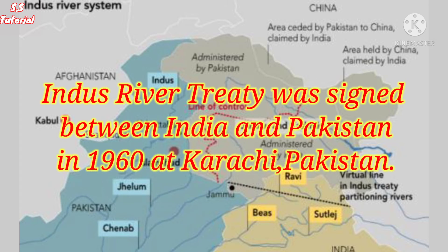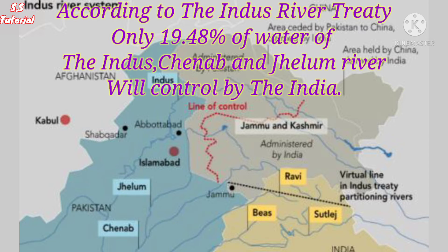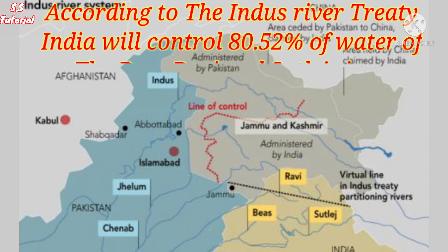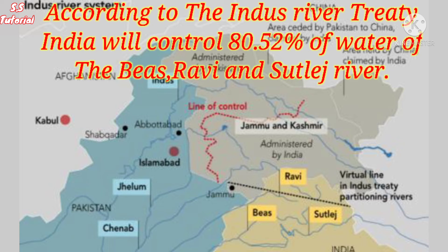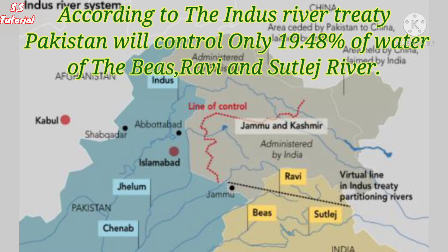There was a river water dispute between India and Pakistan, and the Indus Water Treaty was signed to solve this dispute. The treaty was signed in 1960 at Karachi, Pakistan, between Jawaharlal Nehru, the Prime Minister of India, and Ayub Khan, the President of Pakistan, and was brokered by the World Bank. The agreement stipulates that Pakistan will control 80.52% of water of the Indus, Chenab, and Jhelum rivers, and India will control 19.48%. India will control 80.52% of water of the Beas, Ravi, and Satlej rivers, and Pakistan will control 19.48%.